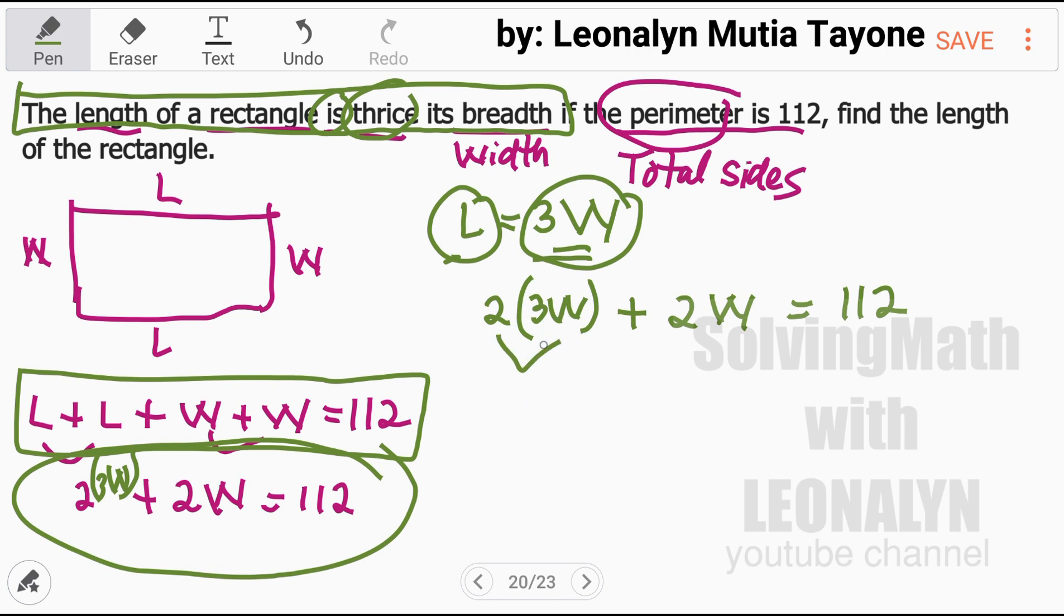2 times 3W, that is 6W, plus 2W, equals 112. These two are the same terms, so we can add them. 2W plus 6W, that is 8W, equals 112.